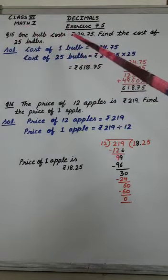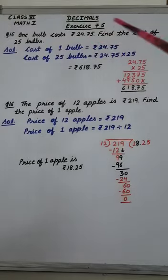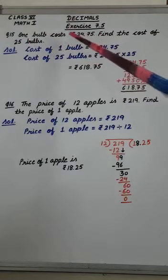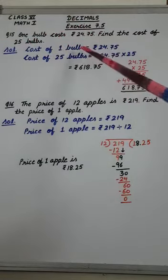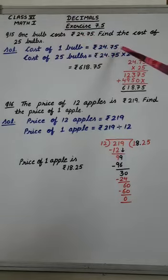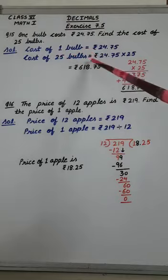One bulb costs rupees 24.75. Find the cost of 25 bulbs. In the question it is given that cost of one bulb is rupees 24.75 and we have to find cost of 25 bulbs.